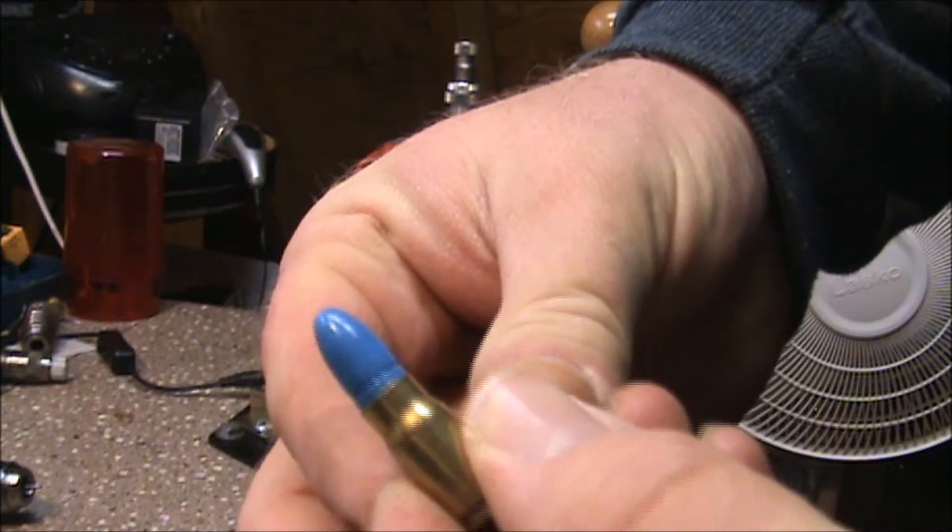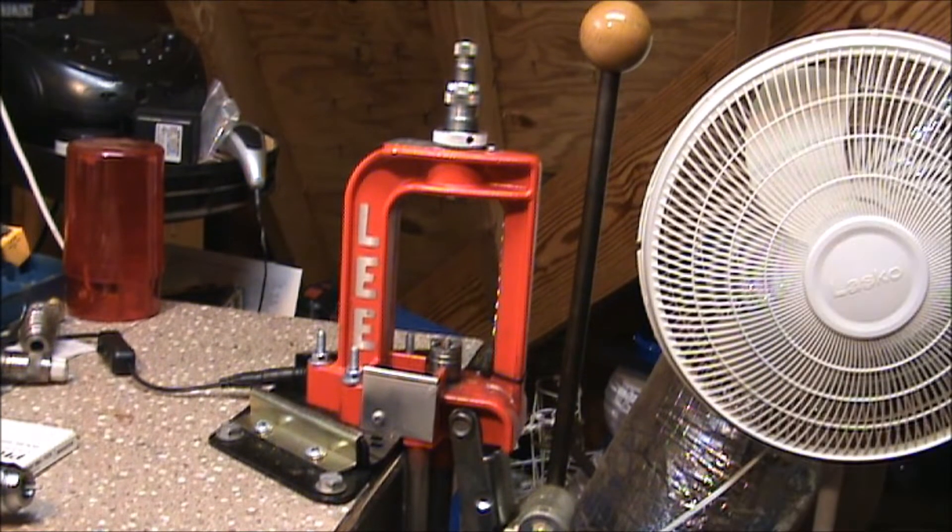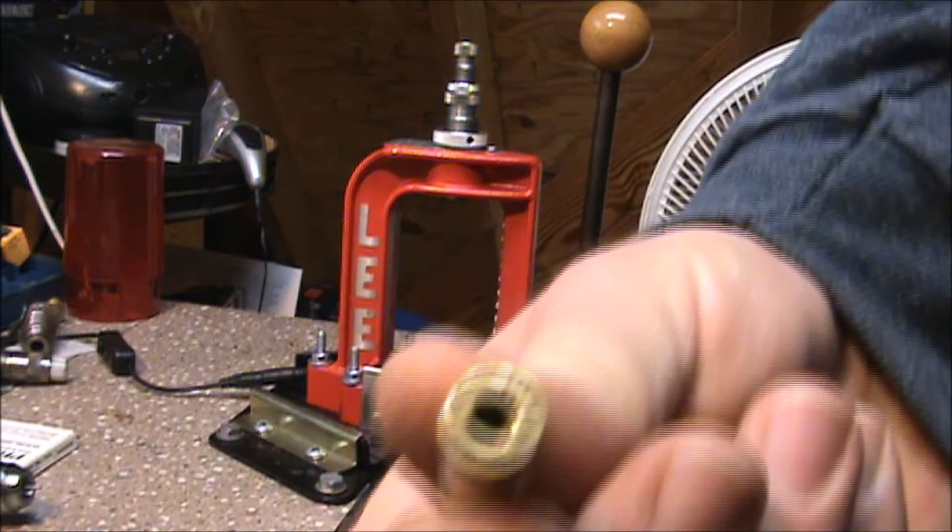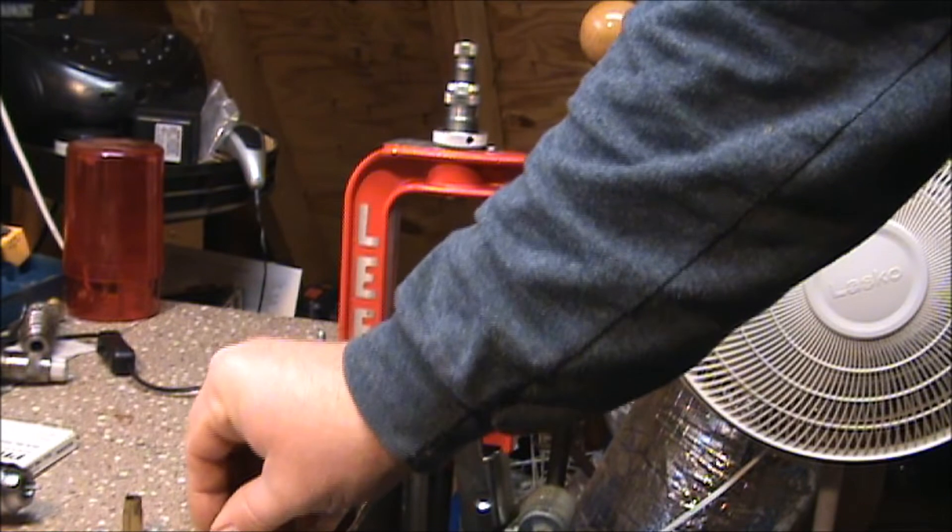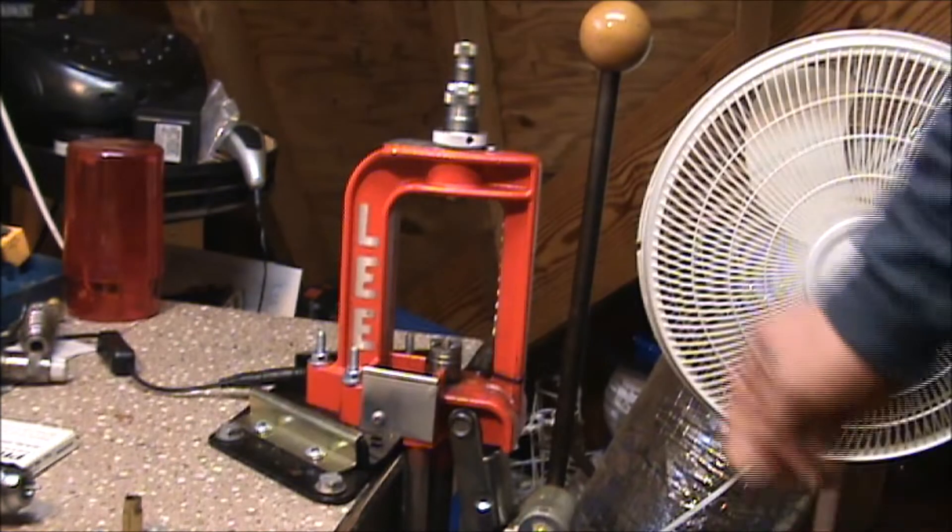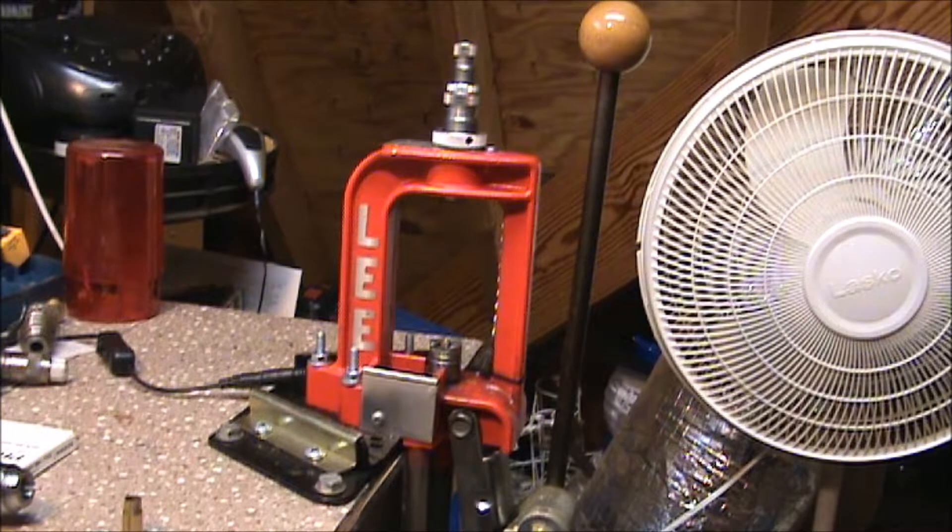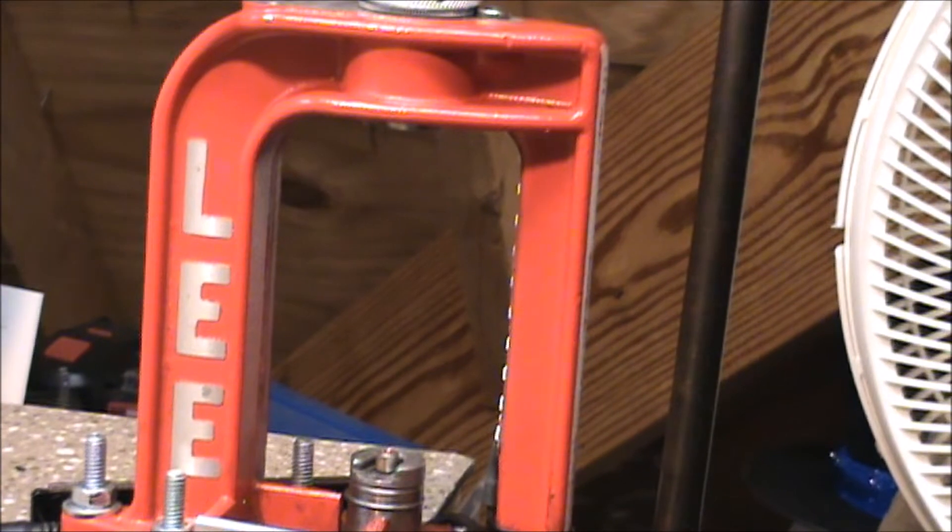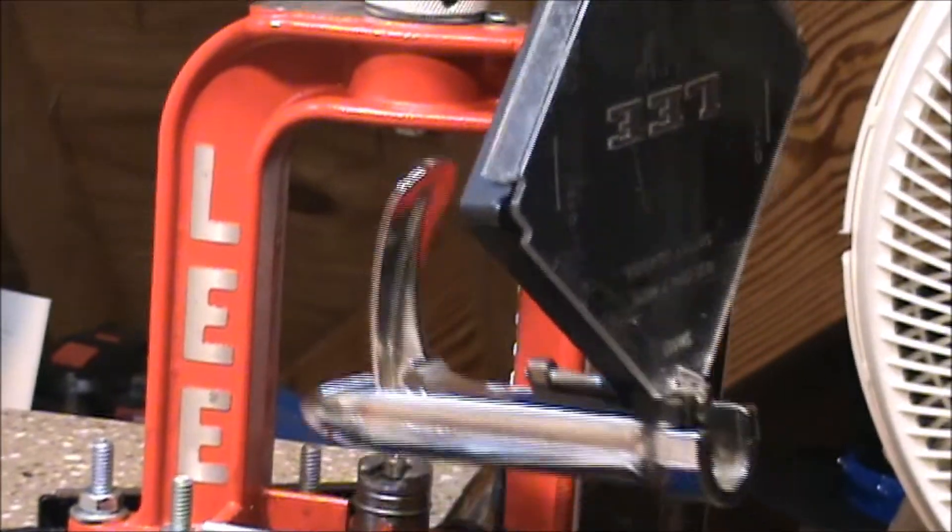Alright, we'll be right back with the next step. Alright, the next thing we got to do, we have a sized, hopefully clean case. This is one that I've just sized, I'm just showing for demonstration. And we're going to have to put in our primer. You can use the primer arm on your press right here or various other methods.